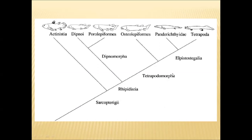Another group is Tetrapodomorpha, which is very important. From this group only, the first tetrapoda organisms — the first amphibians — originated. Among Tetrapodomorpha, several groups are there, such as Osteolepiformes and Panderichthyidae — all these groups are now extinct. Only tetrapods are living now. The ancestors and relatives of Tetrapoda which come under Tetrapodomorpha are all extinct; only tetrapods remain.